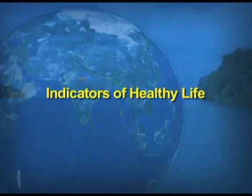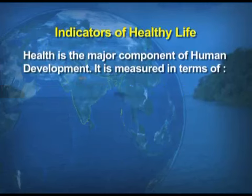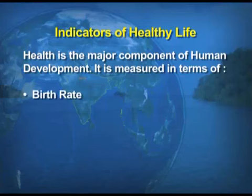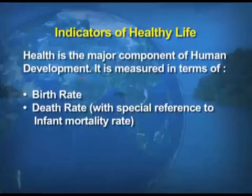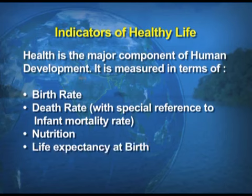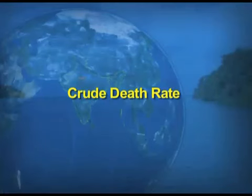Now we talk about the indicators of a healthy life, because health is one of the major indicators and a major component of human development. It is measured in terms of: number one, birth rate; number two, death rate - with special reference to infant mortality rate; number three, nutrition; and number four, life expectancy at birth.